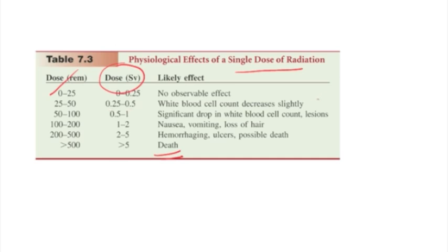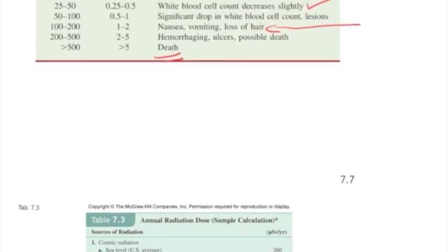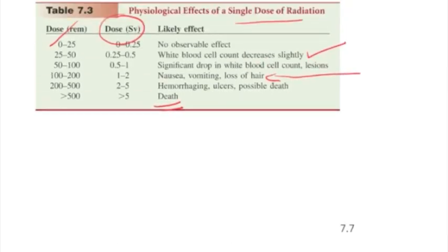And then this low dose between 0.25 and 0.5 white blood cell count decreases slightly, so that means there's some kind of immune response going on, and up to 1 to 2 nausea, vomiting, loss of hair. This is where you'll start seeing radiation sickness where people are physically ill from being exposed to high levels of radiation. So there's different ways of measuring the biological effects. This high dose radiation sickness is rarely ever observed.